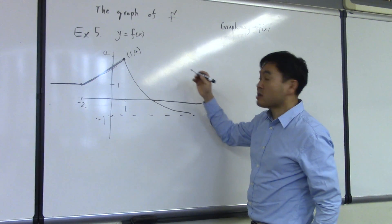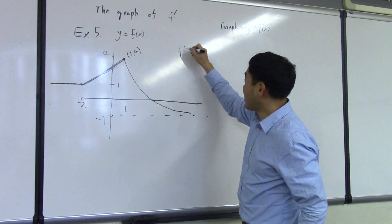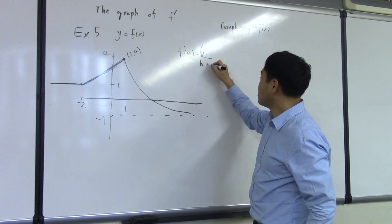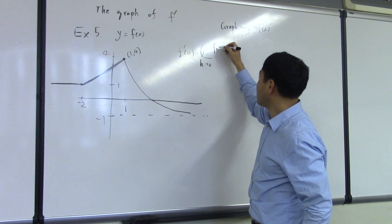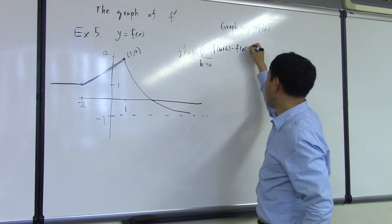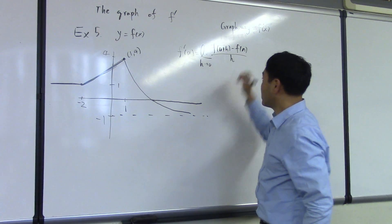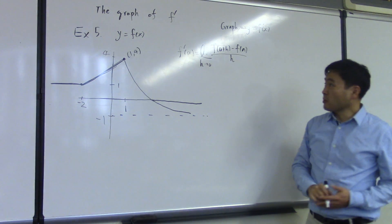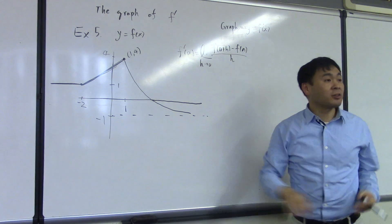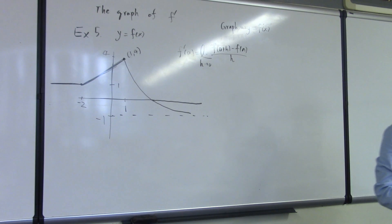And if you recall, the definition of the derivative was f prime at a is limit h going to 0 of f of a plus h minus f of a over h, right? So, derivative is defined as the limit. Does limits always exist? No. When do they exist? When the left limit and the right limit agrees.